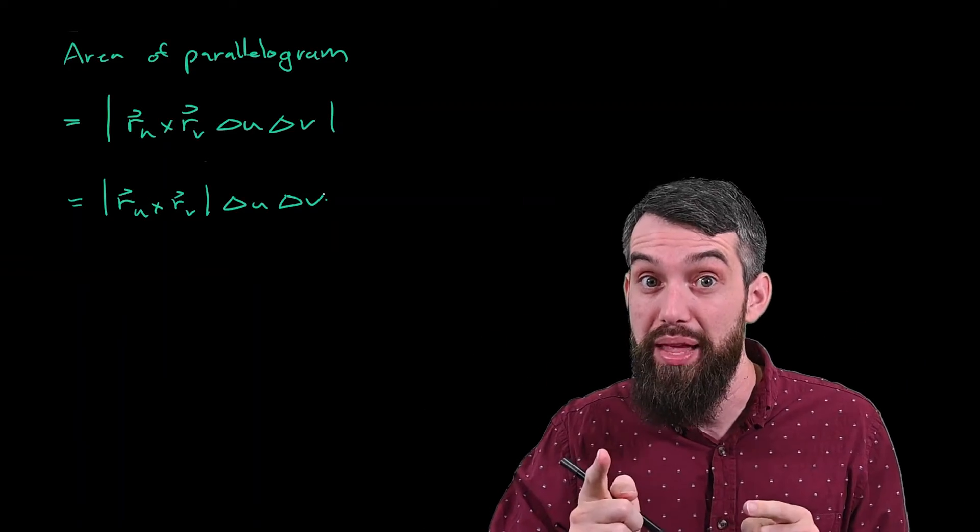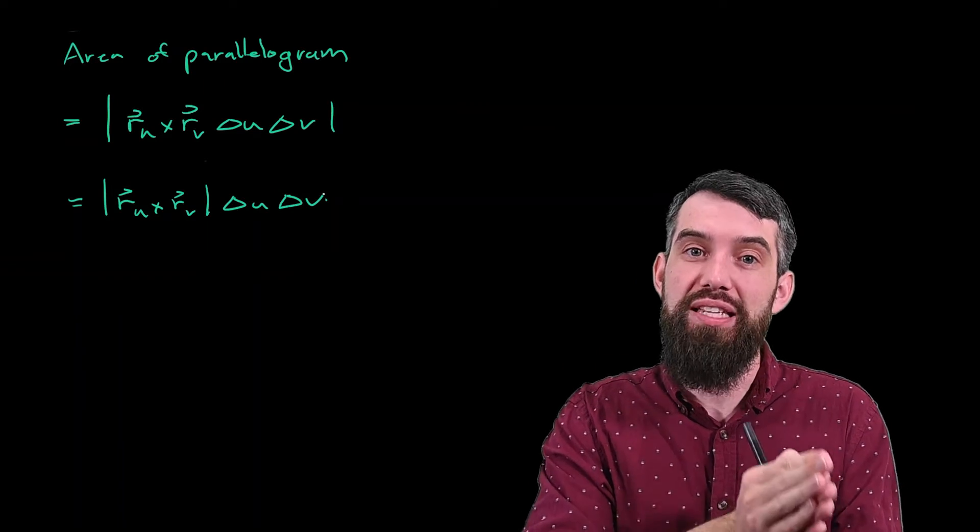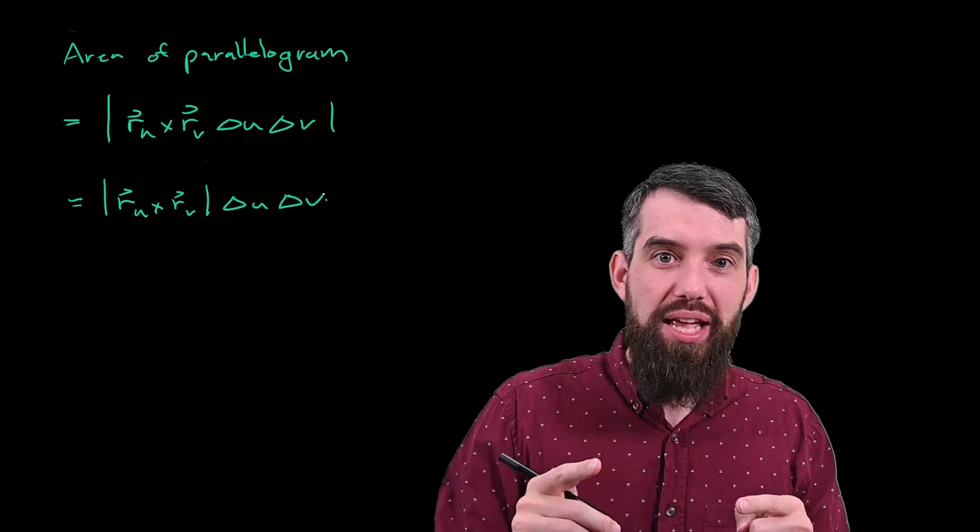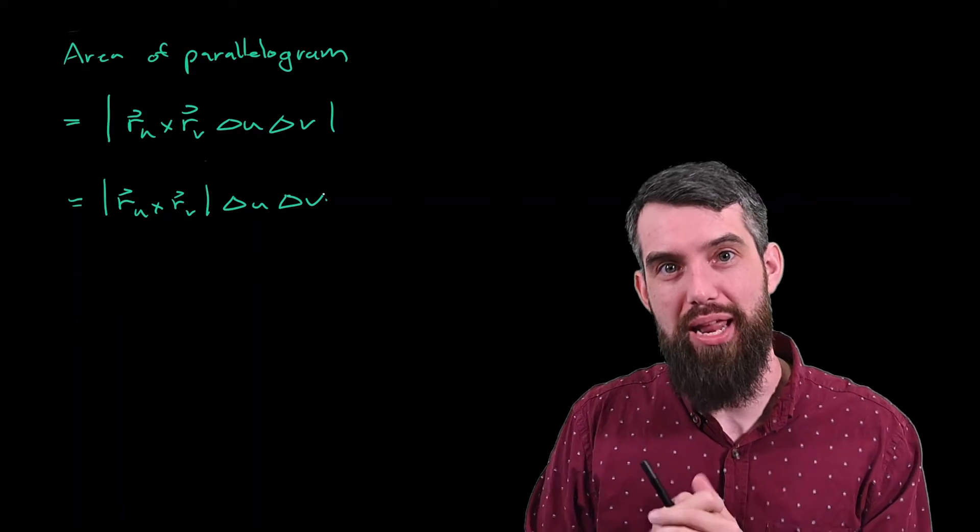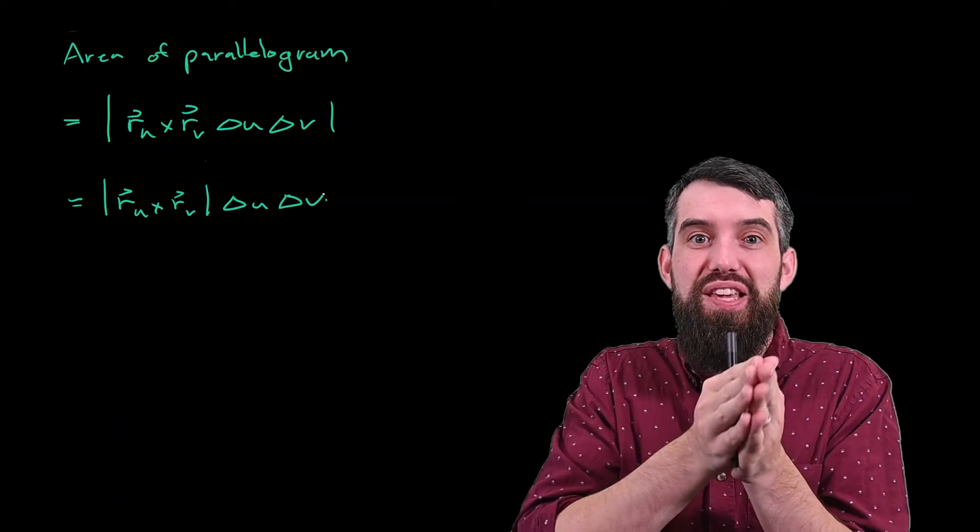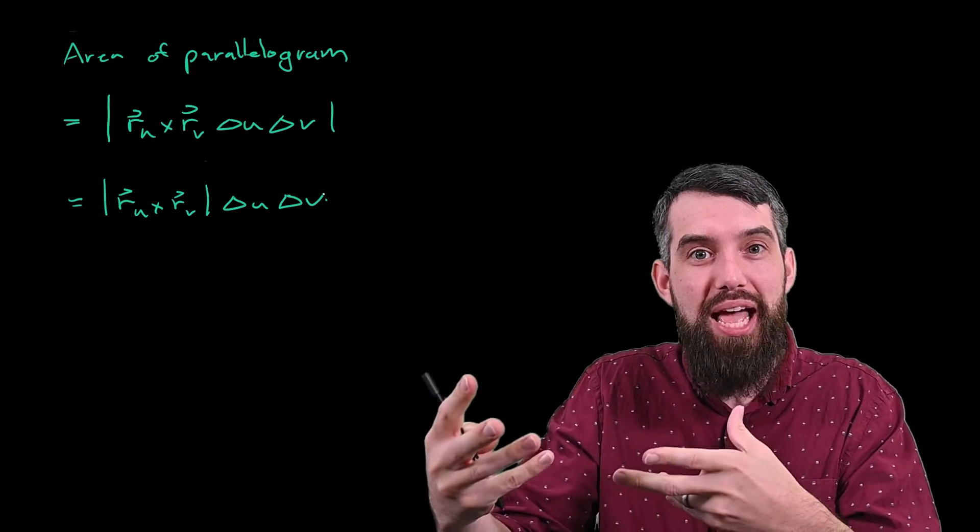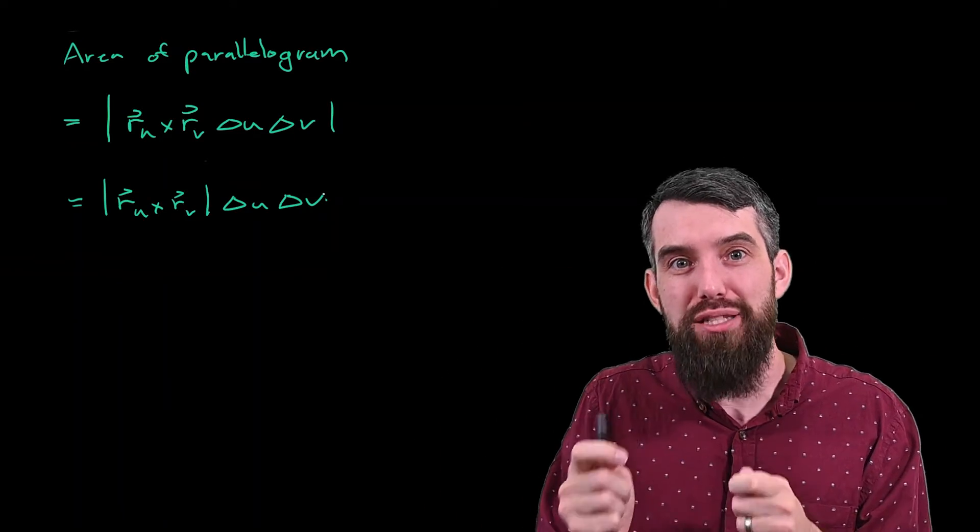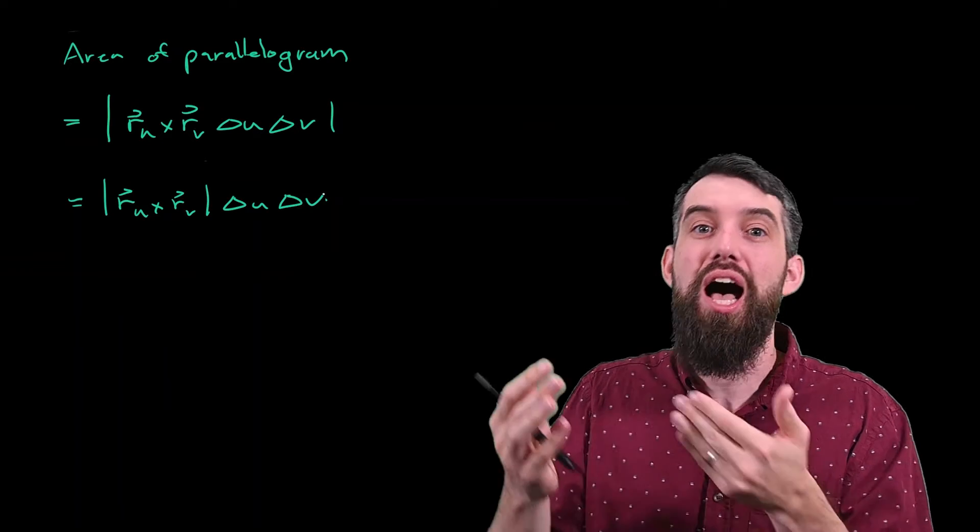Namely, I'm going to think of a limit as the delta U and the delta V's get small. Namely, I'm adding up all sorts of these little parallelograms. But I'm taking the limit as the delta U's and the delta V's get smaller, which means there's more and more parallelograms, and in that limit it transforms into the definition of an integral.